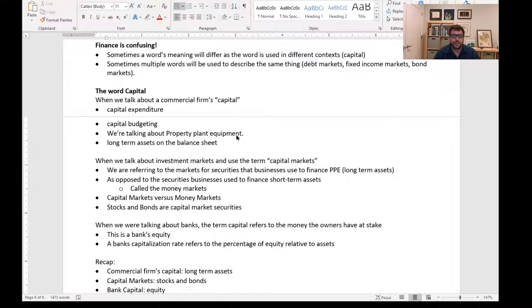Let's talk about the word 'capital.' For commercial firms, capital means property, plant, and equipment—long-term assets on the balance sheet. But in investment markets, capital markets refer to securities that businesses use to finance PPE, as opposed to money market securities for short-term assets. Here, capital refers to stocks and bonds—liabilities and equity on a commercial firm's balance sheet, but assets on an investment firm's balance sheet. Different uses of the word capital.